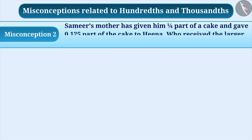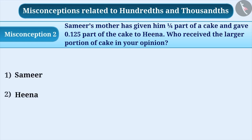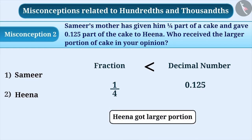Misconception 2. Samir's mother has given him one-fourth part of a cake and given 0.125 part of the cake to Hina. Who received the larger portion of cake in your opinion? Some students think that decimal numbers are always greater than fractions. They don't use mathematical operations for comparison and simply consider that Hina must have received a larger portion.